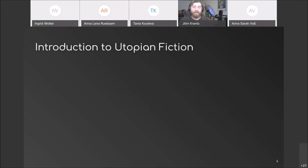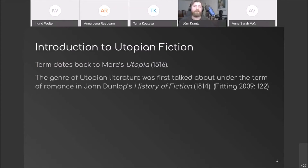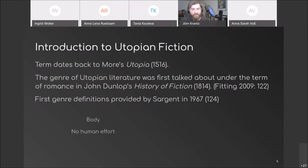Let me give you a rundown of the genre definition. The term itself, its etymology, dates back to 1516 and was derived from Thomas More's novel Utopia. A first discussion of utopian literature can be found in John Dunlop's History of Fiction from 1814, and the first genre definitions were provided by Sargent in 1967. Sargent distinguishes between a body utopia and a city utopia.